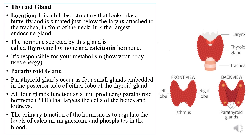The next gland is the parathyroid gland. The parathyroid gland occurs as four small glands embedded into the posterior side of either lobe of the thyroid gland. As you can see in the diagram — the frontal view and back view of the thyroid gland — in the back view, the four circles at the four corners are the four lobes of the parathyroid gland on the posterior side of the thyroid gland. All four glands function as a unit and produce parathyroid hormone, which targets the cells of the bones and kidneys.